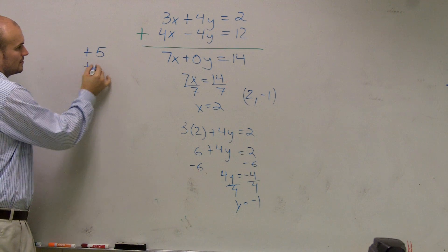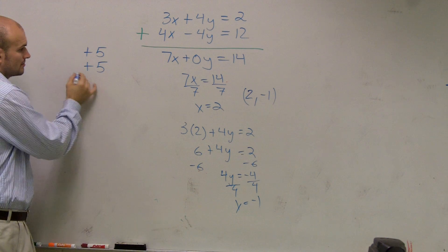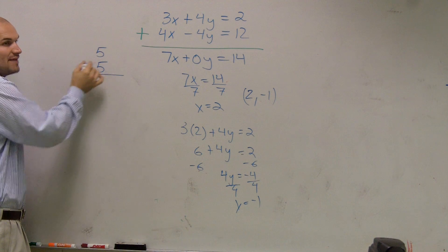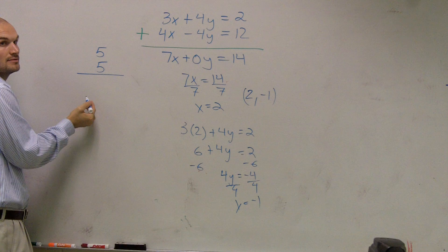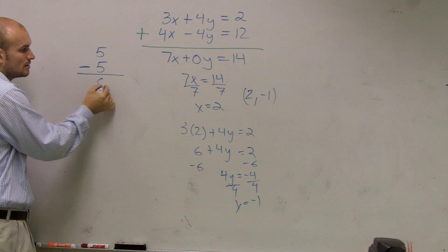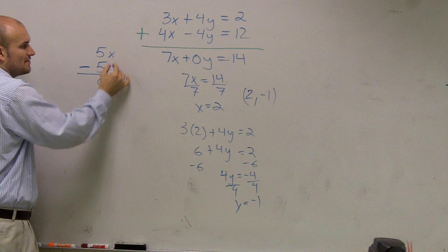Think about it this way. Positive 5. Positive 5, right? I need to get this to be a 0. So what do you have to do? What do you have to do with 5 and 5 to get that to be 0? Add or subtract? Subtract. Subtract, right?